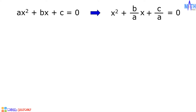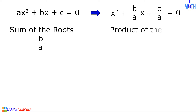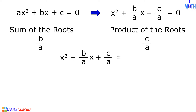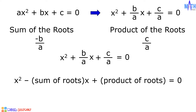Let us recall that the sum of the roots is negative b over a and the product of the roots is c over a. The equation x squared plus b over a times x plus c over a equals 0 can be written as x squared minus the sum of roots times x plus the product of roots equals 0.